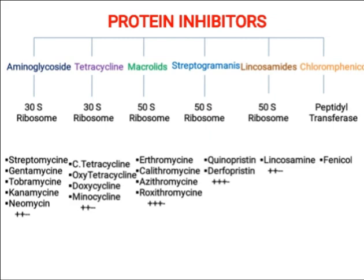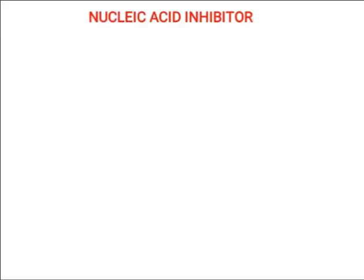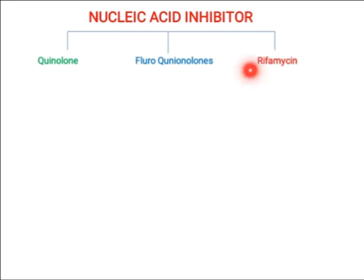Then we have nucleic acid inhibitors — antibiotics which inhibit nucleic acid synthesis. We have quinolones, fluoroquinolones, and rifamycin. Rifamycin basically targets and inhibits DNA-dependent RNA polymerase.